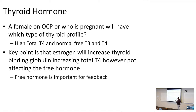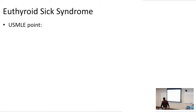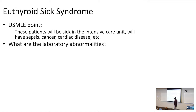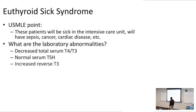Let's go through euthyroid sick syndrome. These patients will be sick — in the ICU with sepsis, cancer, or cardiac disease. Laboratory abnormalities show decreased total serum T4 and T3 with a normal serum TSH. However, you get increased amounts of reverse T3.